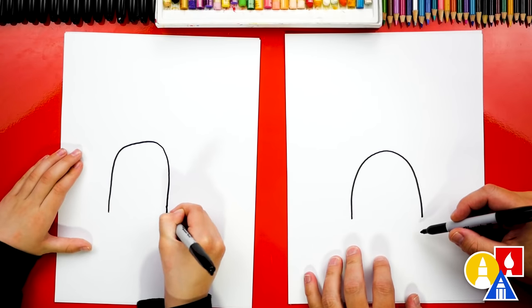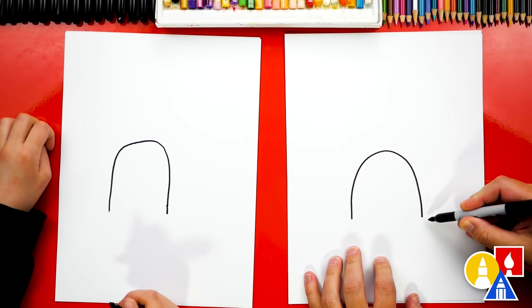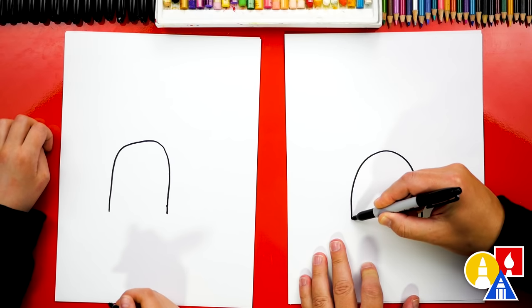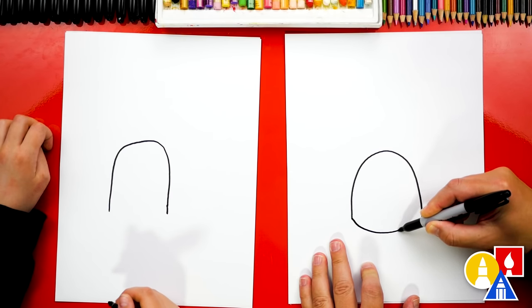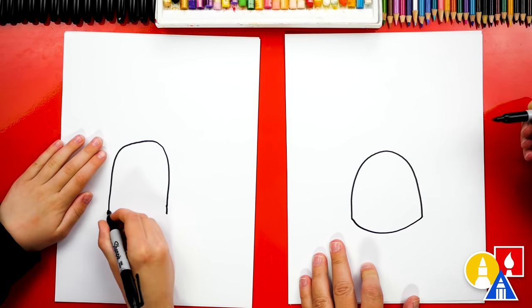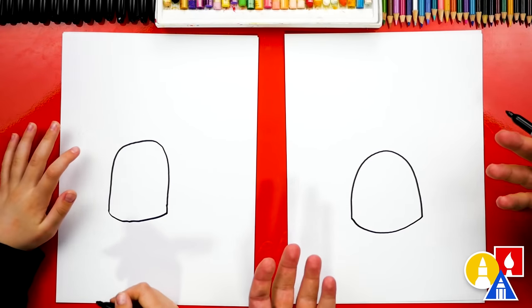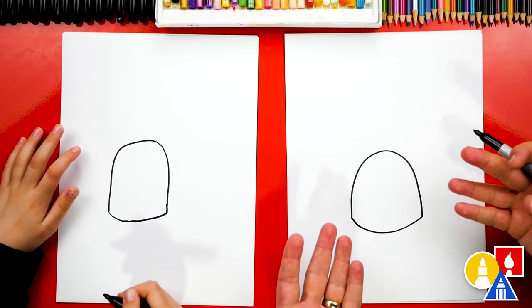Then we're going to draw the bottom of the gumdrop. And instead of just drawing a straight line, we're going to try to make our gumdrop look more 3D. We're going to draw a curve that comes down and then back up for the bottom. This makes it look more round. Nice. We did it. That's easy, right? That's really easy.